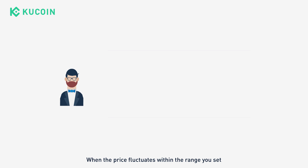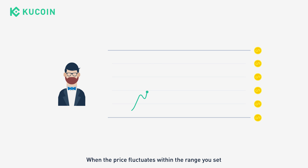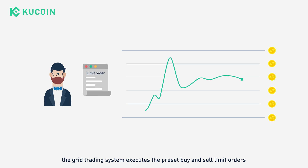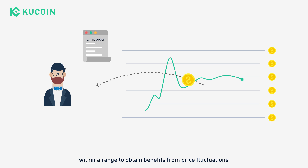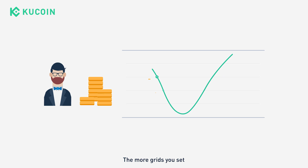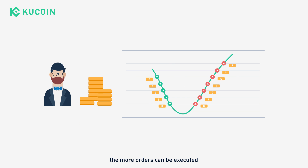When the price fluctuates within the range you set, the grid trading system executes the preset buy and sell limit orders within the range to obtain benefits from price fluctuations. The more grids you set, the more orders can be executed.